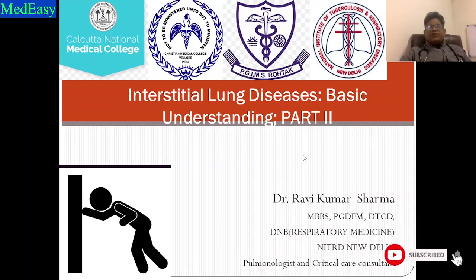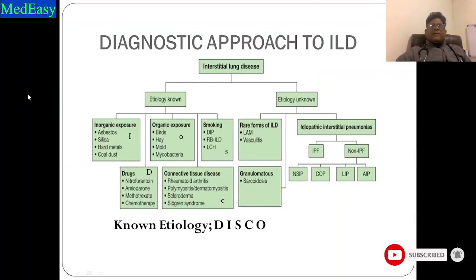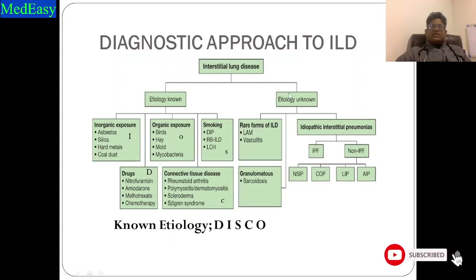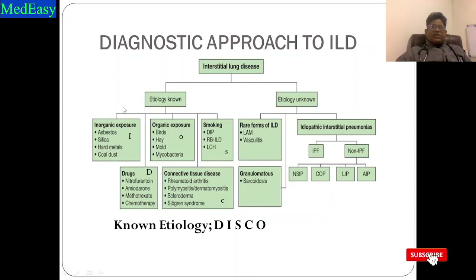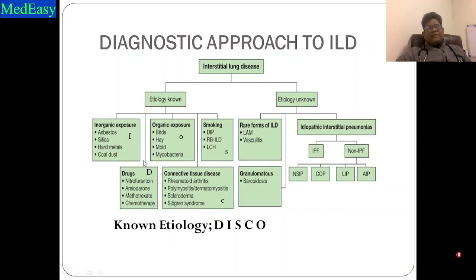Let us begin Part 2. Here we have the diagnostic approach. As discussed in Part 1, ILD has either a known or unknown etiology. For known etiology, a useful mnemonic is DISCO. D is for drugs like nitrofurantoin, amiodarone, methotrexate, and chemotherapy.